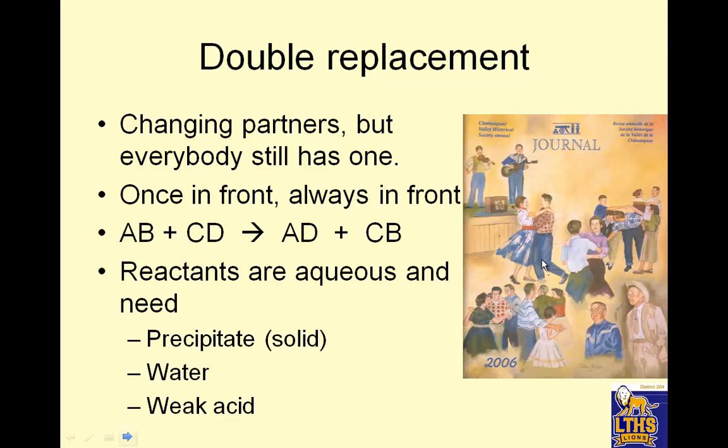So double replacement. Changing partners, but everybody still has a partner. Once in front, always in front. So notice if I've got AB plus CD, notice how A is in front on the left-hand side. A will be in front on the right-hand side, because we always put metals in front. C is a metal, it's in front. The reactants are always going to be aqueous, dissolved in water. And need one of the following to form, one of these to be a reaction. So you need a precipitate, which is a solid. We're going to use our solubility rules. Yay! Water, or a weak acid or base.